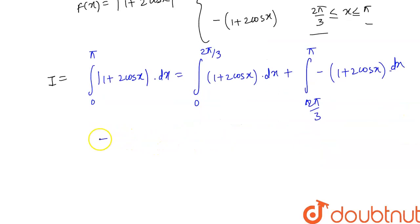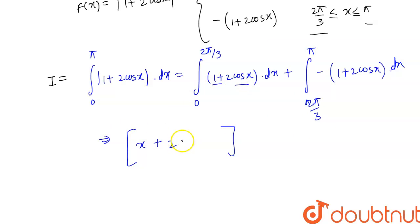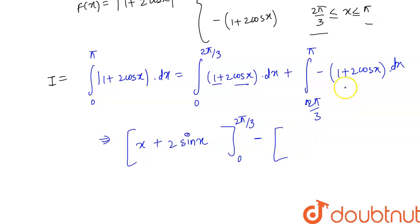Now let's integrate each piece. The integration of 1 is x, and 2 times the integration of cos x is 2sin x. So we write [x + 2sin x] from 0 to 2π/3, minus [x + 2sin x] from 2π/3 to π.